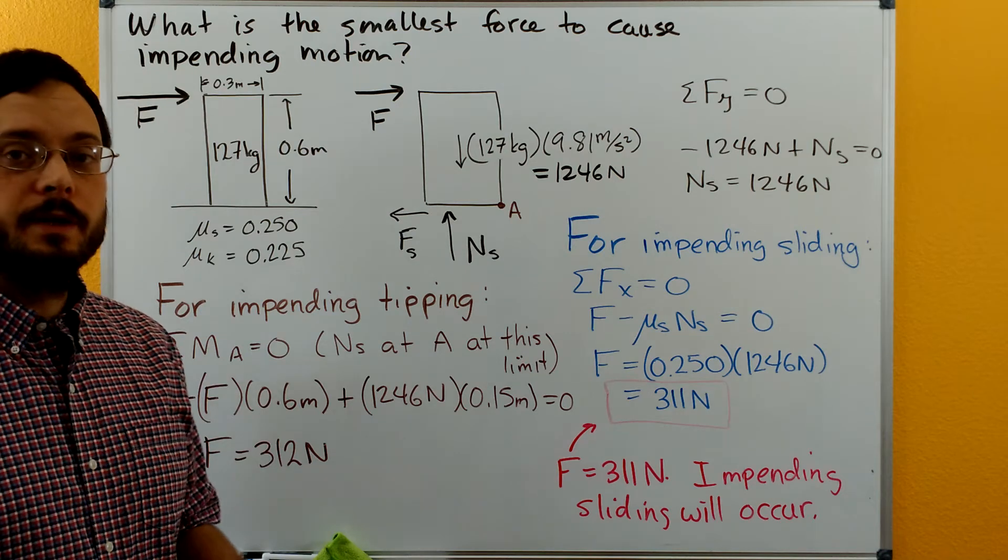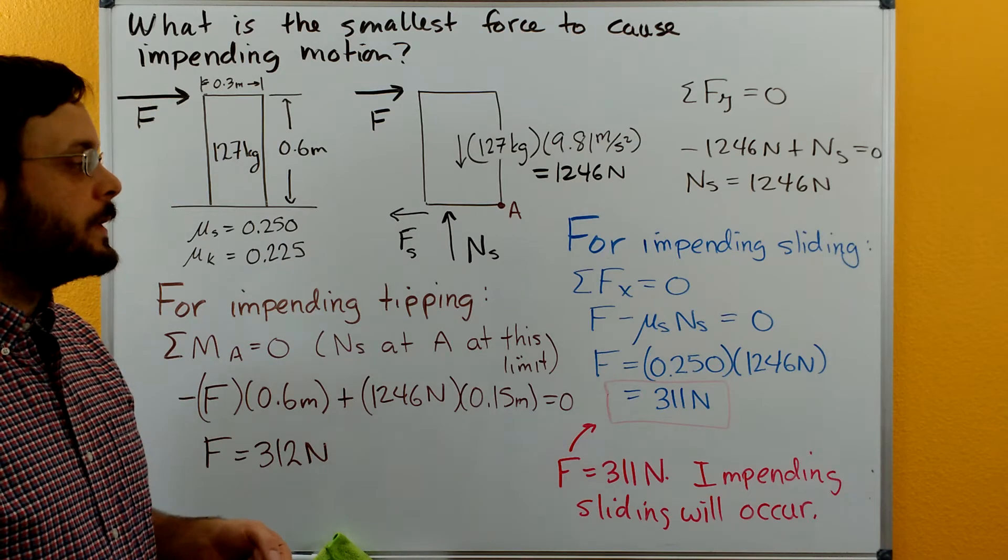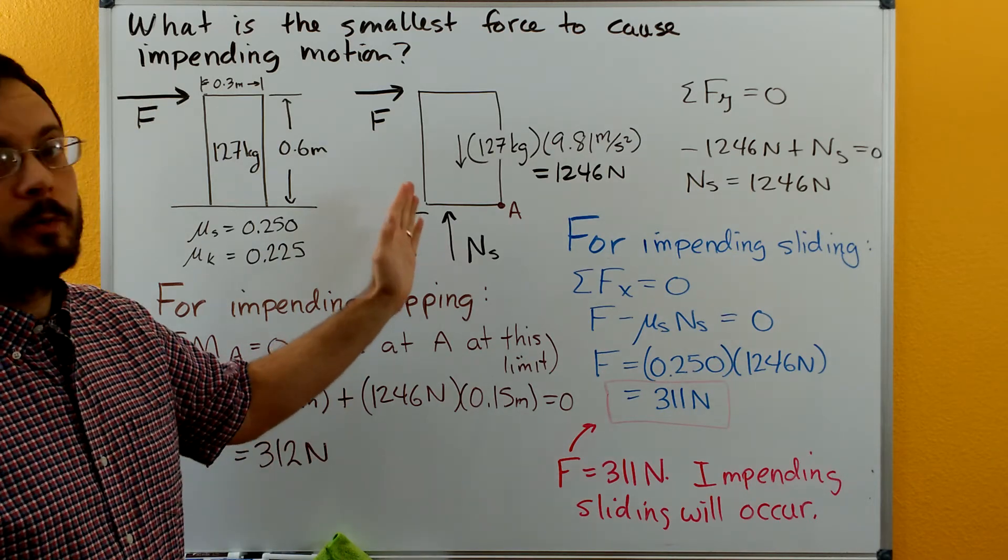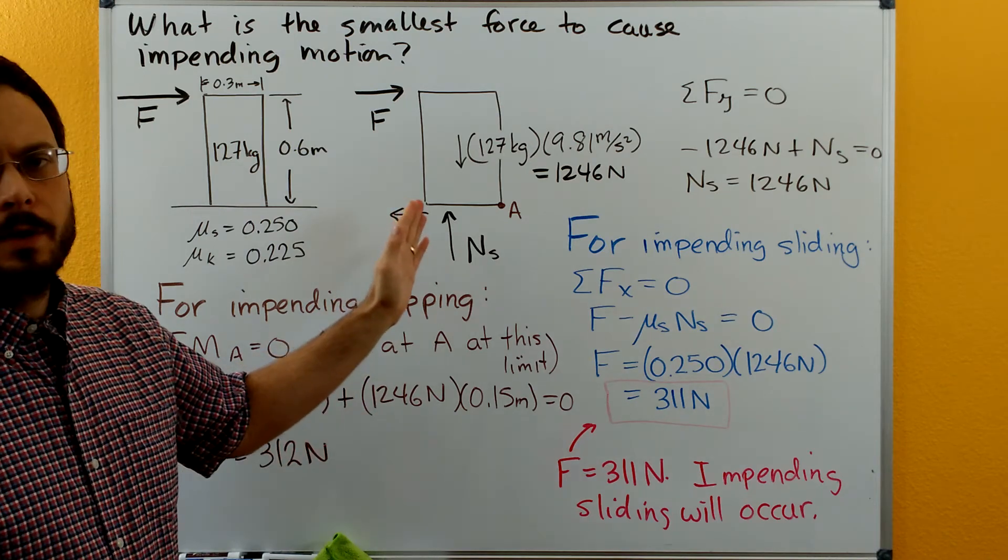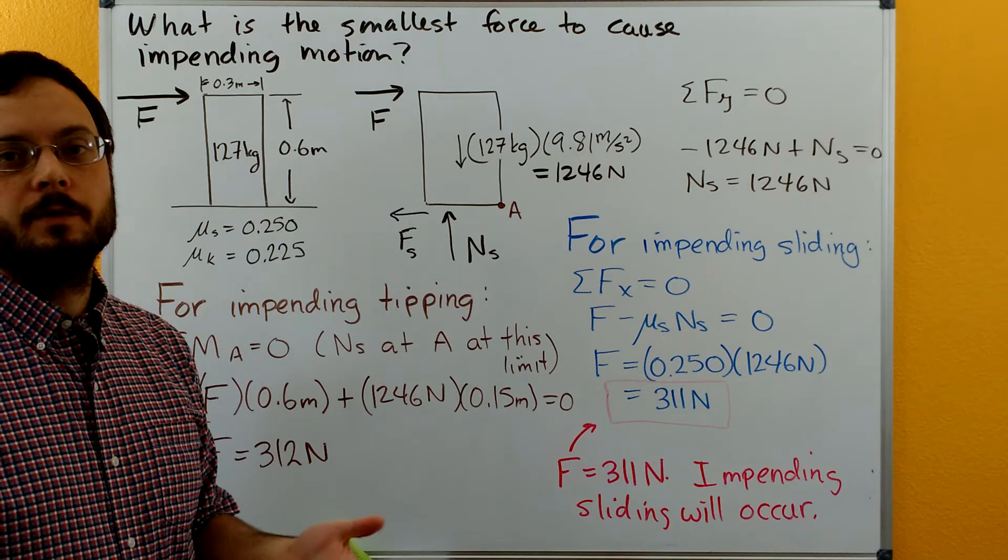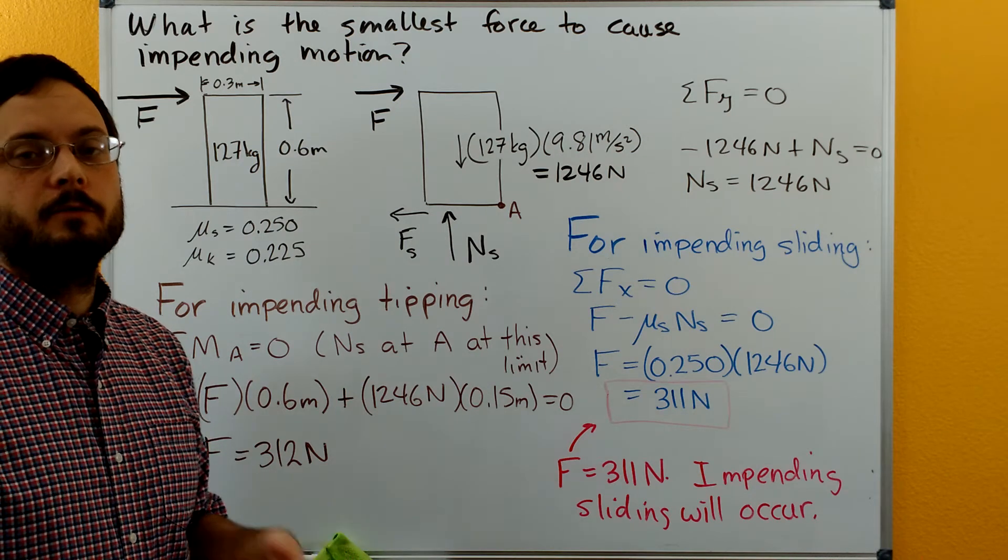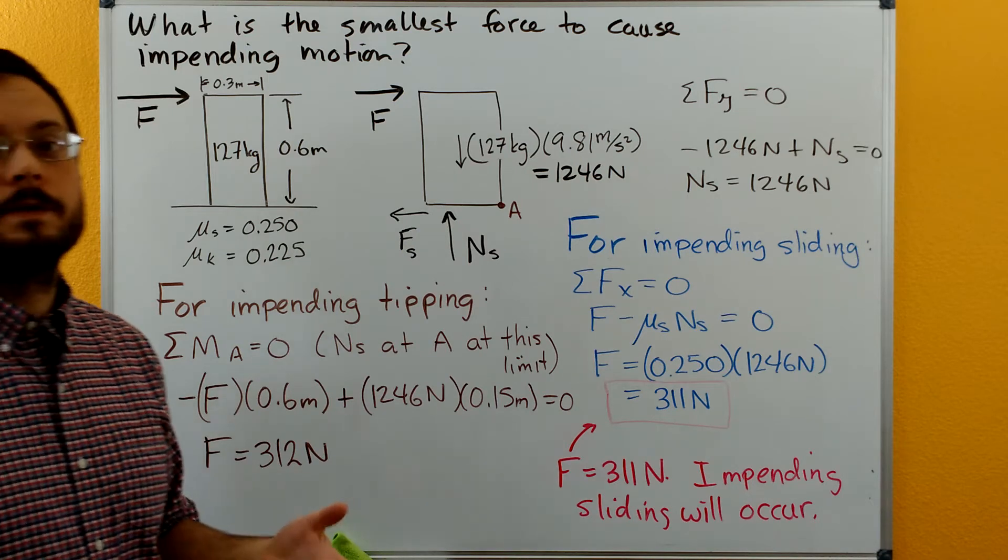We also need to investigate the force required to tip this block over, or make sure that the normal force is still on the block. Usually it's faster just to calculate the force to tip the block over, because then if you find that the normal force is not on the block, you've already got the other force calculated and you don't need to do a separate calculation.